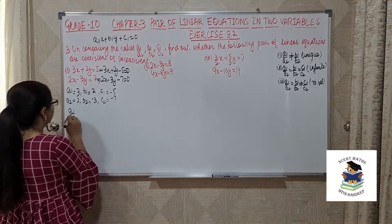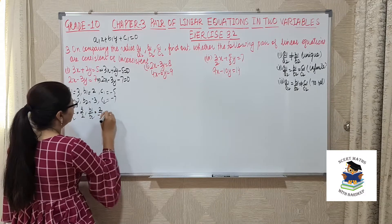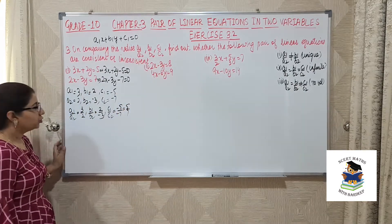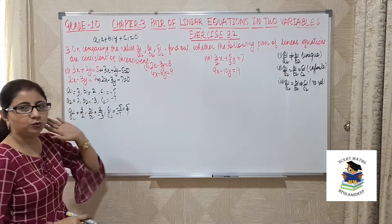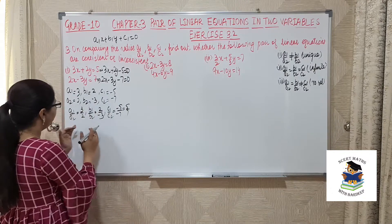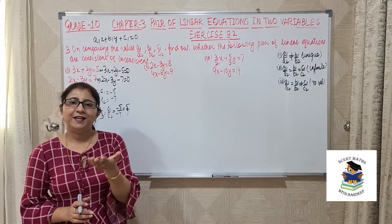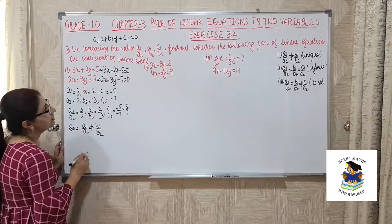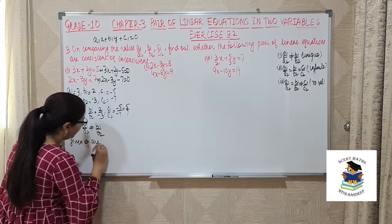Now we find the ratios: a1/a2 = 3/2, b1/b2 = 2/(−3), and c1/c2 = (−5)/(−7) = 5/7. Always compare a1/a2 with b1/b2 first. These two are not equal, so there is no need to check the second and third possibilities. Since a1/a2 is not equal to b1/b2, these equations will have a unique solution. Therefore the given equations are consistent.